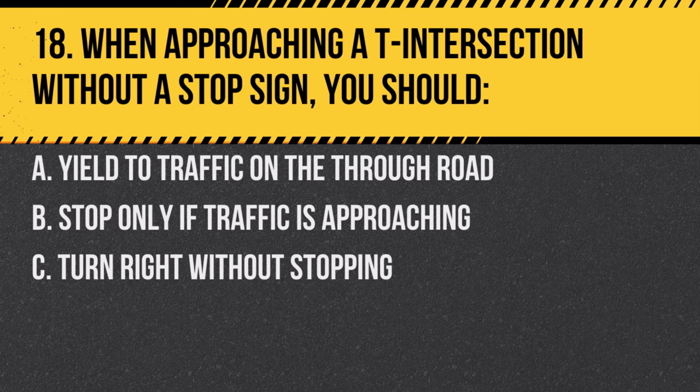Question 18. When approaching a T intersection without a stop sign, you should: a. Yield to traffic on the through road. b. Stop only if traffic is approaching. c. Turn right without stopping. Answer: a. Yield to traffic on the through road. Treat it as a yield situation.